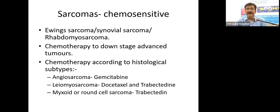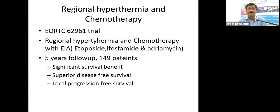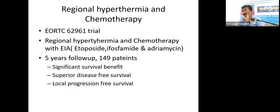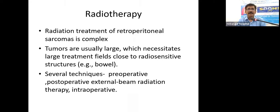Chemotherapy can be used to downstage advanced tumors. Based on histological type: gemcitabine is effective in angiosarcomas; taxanes and trabectedin are effective in leiomyosarcomas; trabectedin is also effective in round cell sarcomas. Regional hyperthermia combined with chemotherapy (etoposide, ifosfamide, doxorubicin) has shown survival benefit in extremity sarcomas in five-year follow-up of 140 patients, but this technique is difficult to administer in retroperitoneal sarcomas.